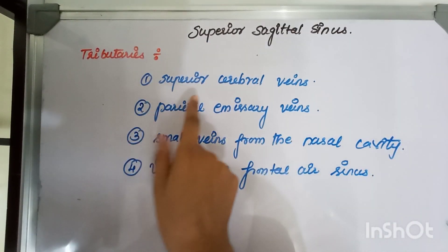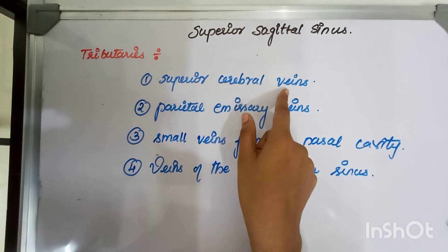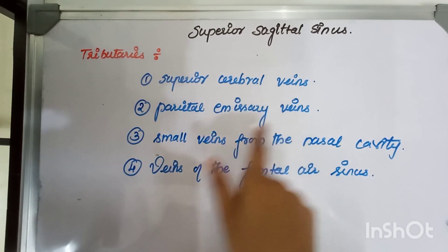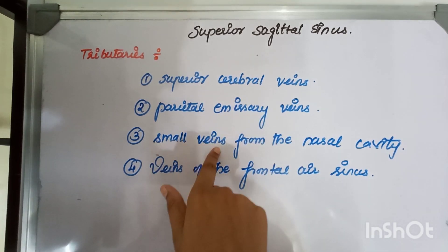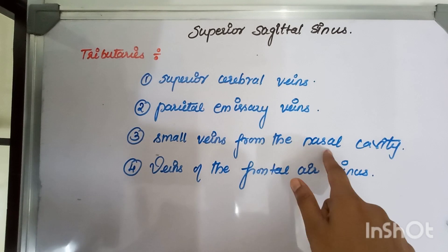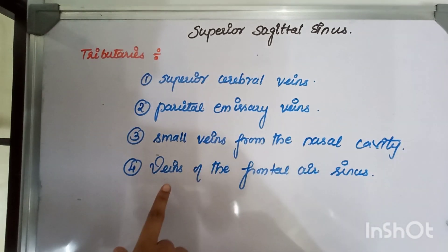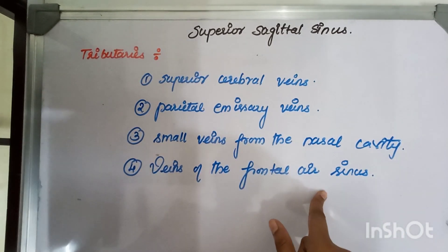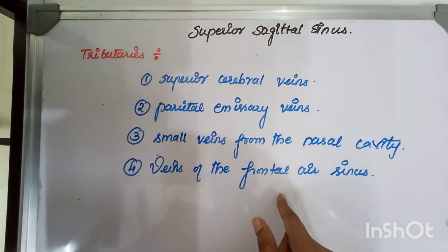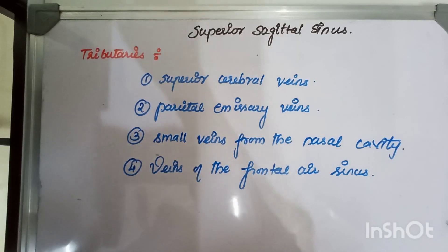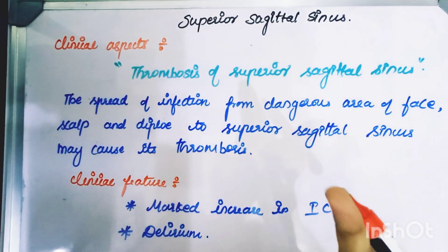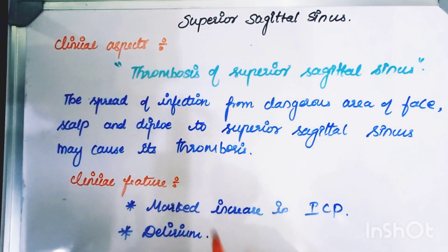The tributaries of the superior sagittal sinus include: the superior cerebral veins, the parietal emissary veins, small veins from the nasal cavity, and veins of the frontal air sinus. These are all the veins which drain into the superior sagittal sinus.